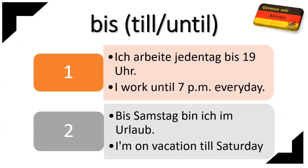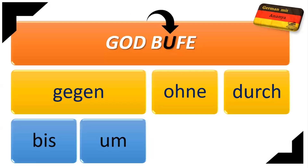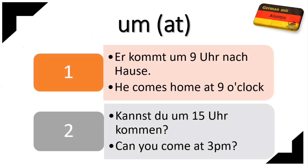The next preposition is B, which is bis, and bis means 'till' or 'until.' For example: 'Ich laufe jeden Tag bis 7 Uhr' — I walk until 7 pm every day. You can also say: 'Bis Samstag bin ich im Urlaub' — I am on vacation till Saturday. For 'till' or 'until,' you will always use bis.